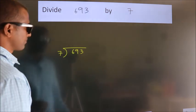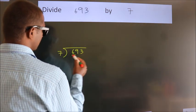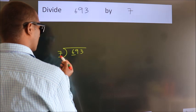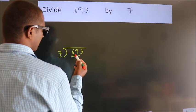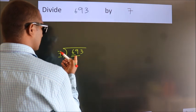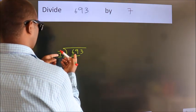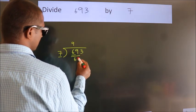Next, here we have 6, here 7. 6 is smaller than 7, so we should take two numbers as 69. A number close to 69 in the 7 table is 7 nines, 63.